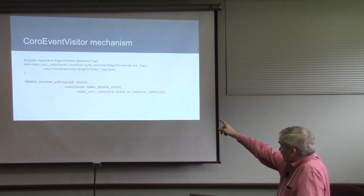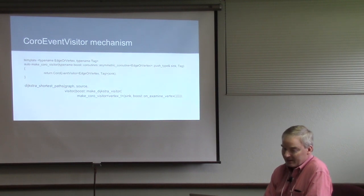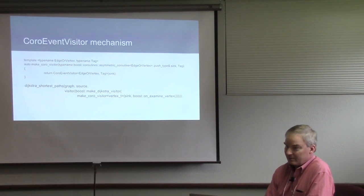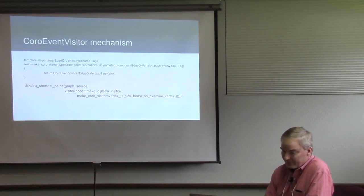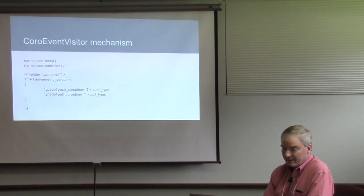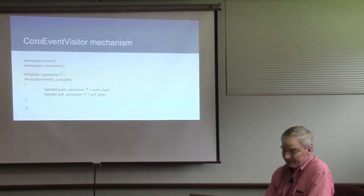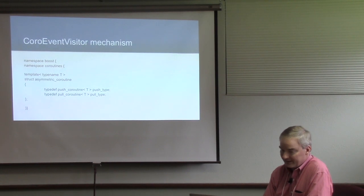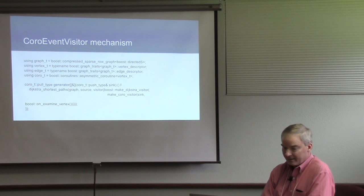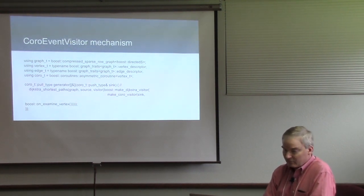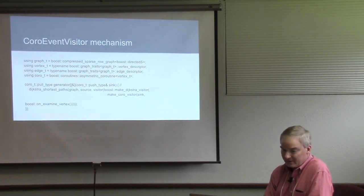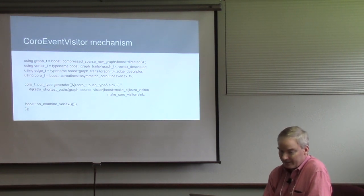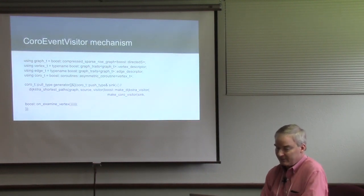For a generic CoroEventVisitor: start with CoroEventVisitorBase, generic for any event type — vertex or edge — which allows use with any graph type. It only needs to know the coroutine type that will receive the vertex or edge. CoroEventVisitorBase publishes the event_filter typedef and binds the coroutine reference. The CoroEventVisitor subclass constructor forwards the coroutine reference to the base, and the apply operator receives the edge or vertex implied by the tag and passes it through. A makeCoroVisitor helper function accepts the push-type coroutine and a trivial tag instance and returns the appropriate CoroEventVisitor. Using pushCoroutine<T> directly instead of asymmetricCoroutine<T>::push_type lets the compiler infer the template parameter.